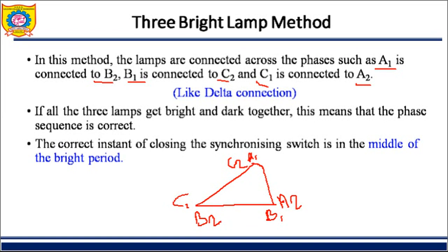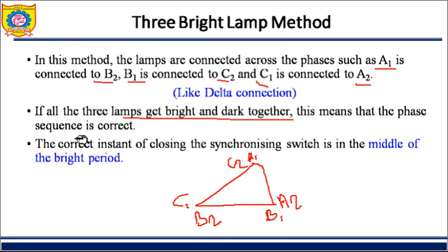If all three lamps get bright or dark together simultaneously, it means the phase sequence is correct. The voltage and phase are fine.